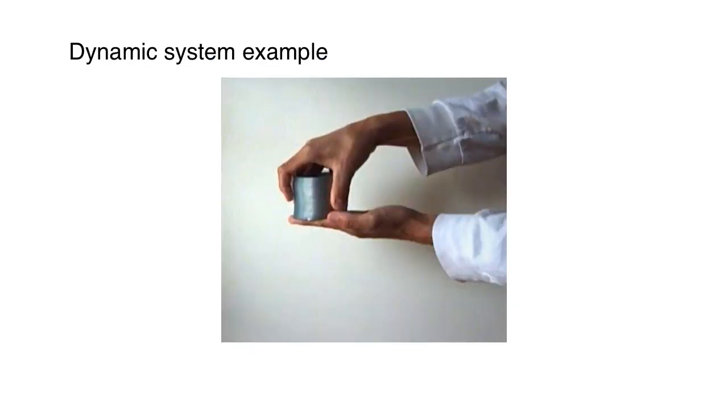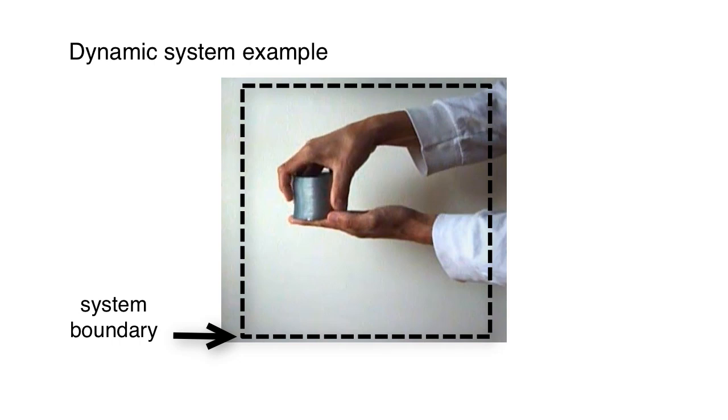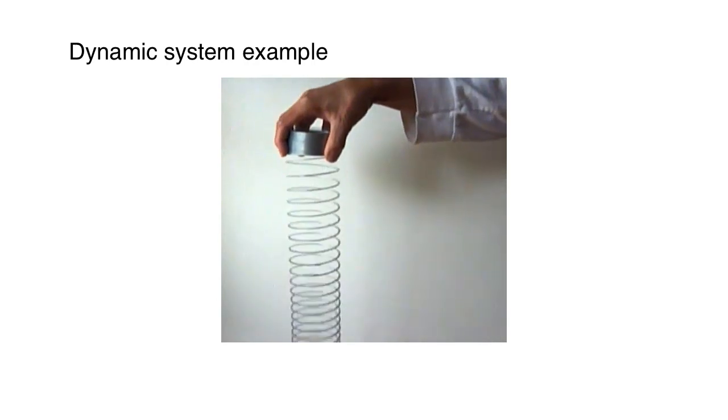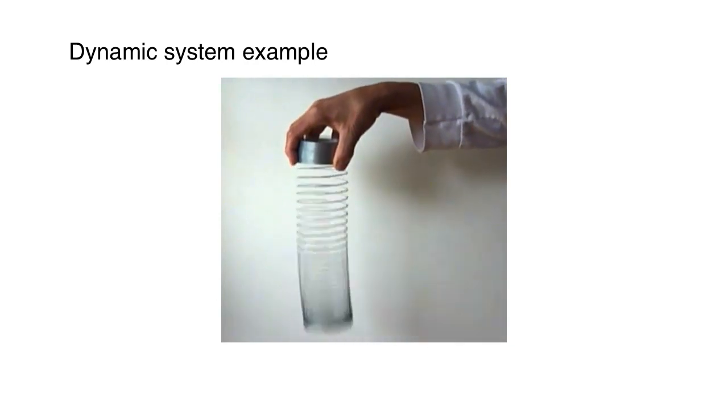I bet you're familiar with this system. Notice we have a system boundary around the hand and the slinky. You know the slinky bounces up and down when the hand is removed.